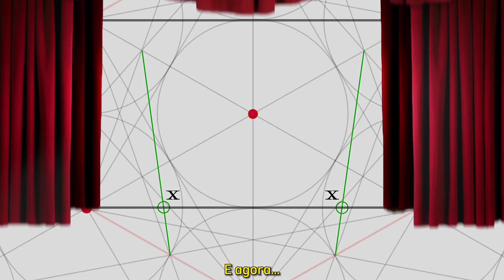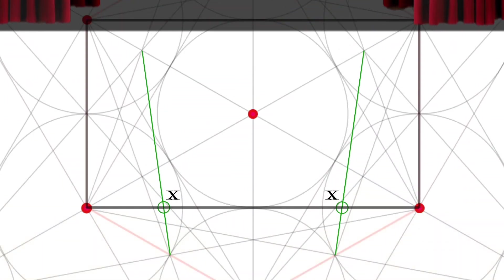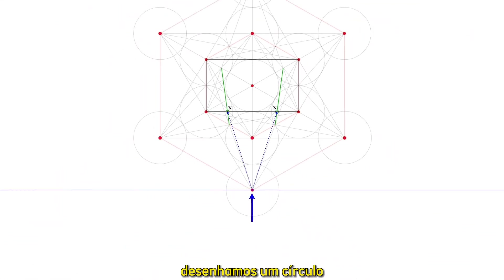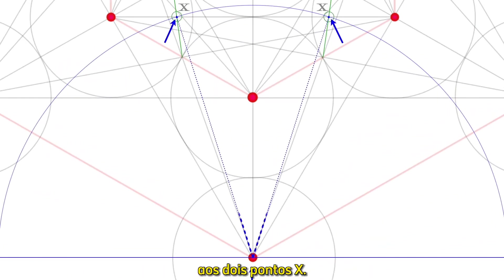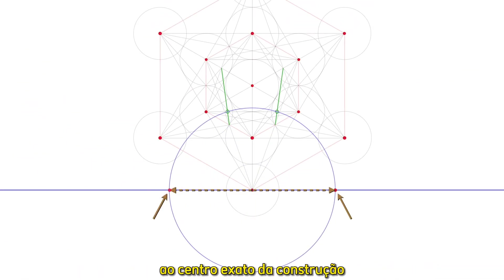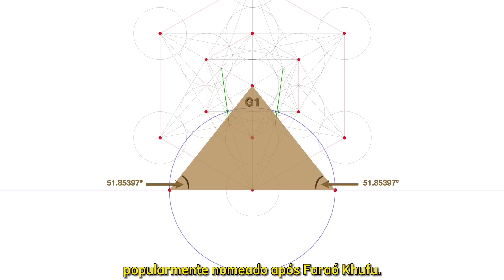And now, the magic! At the baseline of Metatron's cube, we draw a circle whose radius is the distance from the base center to the two X points. We simply join the diameter baseline points to the very center of the construction and discover a perfect cross-section of the Great Pyramid, or G1, popularly named after Pharaoh Khufu.